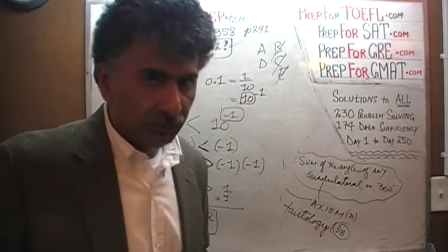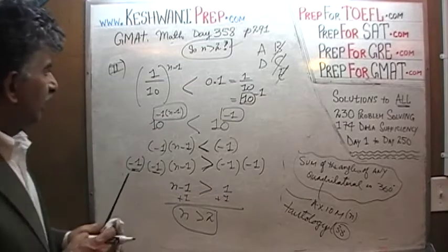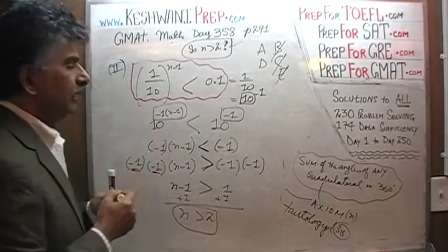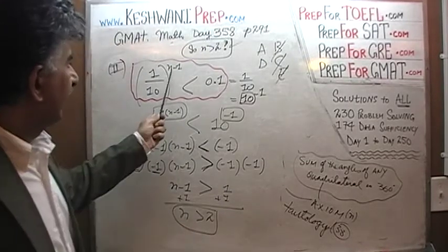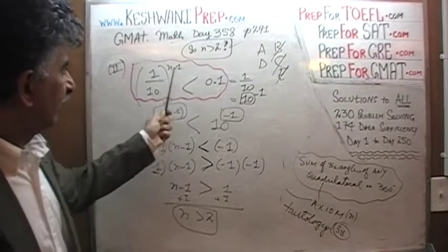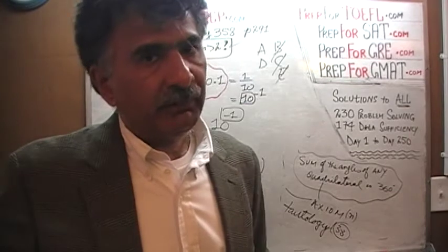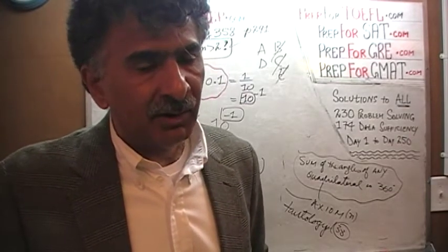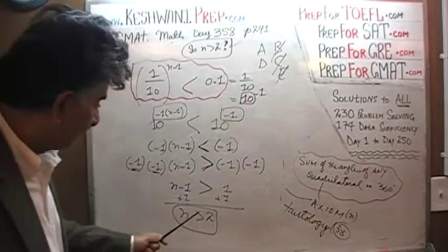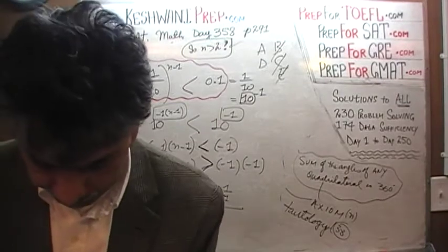As I always point out, we don't have to do all of this work — we simply have to understand that this inequality, as presented, allows us to determine something definitive about N. As long as we can do that, we can answer this question. The answer is going to be either yes or no, but we will be able to answer it. So the answer to problem 169 is D. Let's go to the next one — number 170.